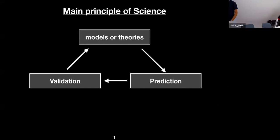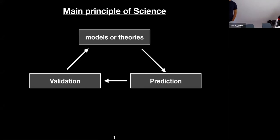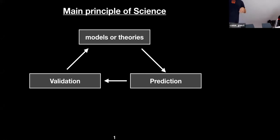A little introduction: the principle of science is that we somehow have to generate or think about models or theories. With these in hand, we can make predictions on what will happen or which phenomena should occur, which gives us a way of designing experiments for validation. This loops back and makes models better. The hope is that if you iterate this a while, your theory becomes more accurate.